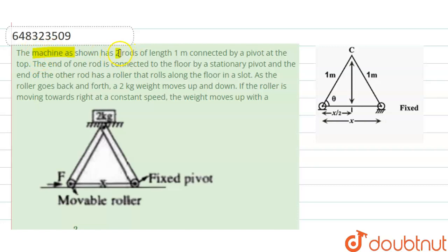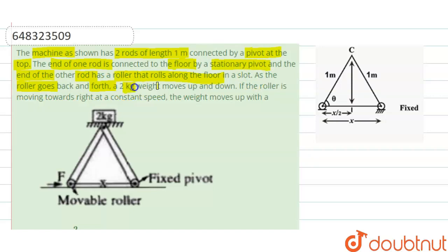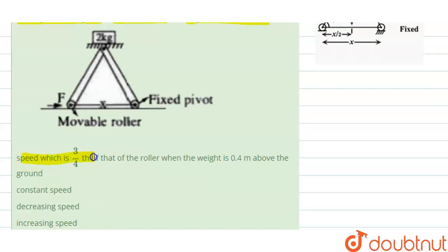A machine as shown has two rods of length one meter connected by a pivot at the top. One end of a rod is connected to the floor by a stationary pivot, and the end of the other rod has a roller that rolls along the floor in a slot. As the roller goes back and forth, a 2 kg weight moves up and down. If the roller is moved towards the right with a constant speed, the weight moves up with a speed which is 3/4 of the roller's speed when the weight is 0.4 meters above the ground.